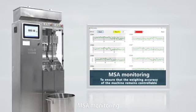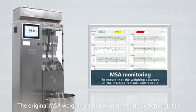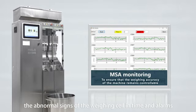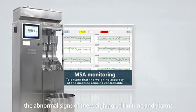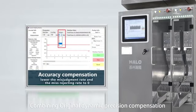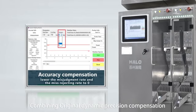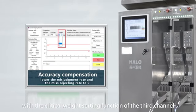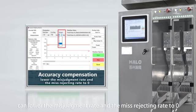MSA Monitoring. The original MSA weighing accuracy monitoring system detects the abnormal signs of the weighing cell in time and logs. Accuracy Compensation. Combining original dynamic precision compensation with the critical weight sorting function of the third channel can lower the misjudgment rate and the mis-rejecting rate to 0%.